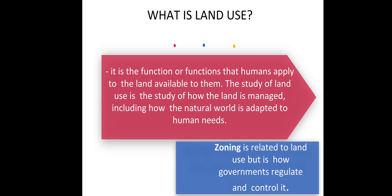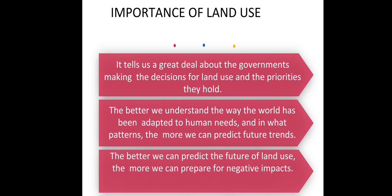Zoning is related to land use but is how government regulates and controls land. Some important factors of land use: first, it tells us a great deal about the governments making decisions of land use and the priorities they hold. Second, we understand the way the world has been adapted to human needs and in what pattern. Finally, the more we can predict future trends of land use, the more we can prepare for the negative impact.